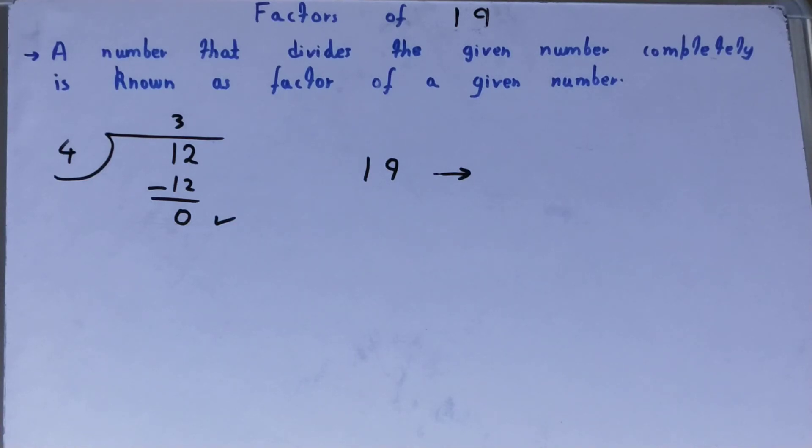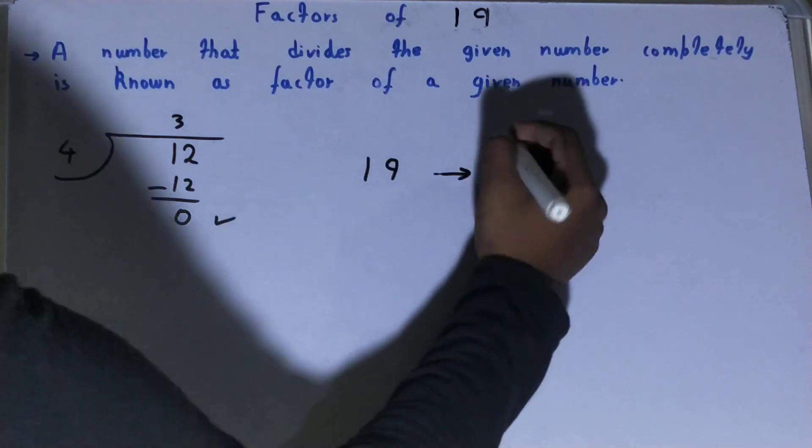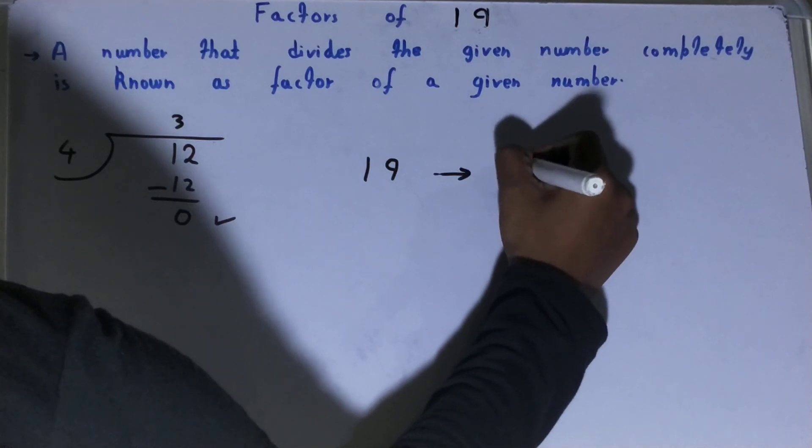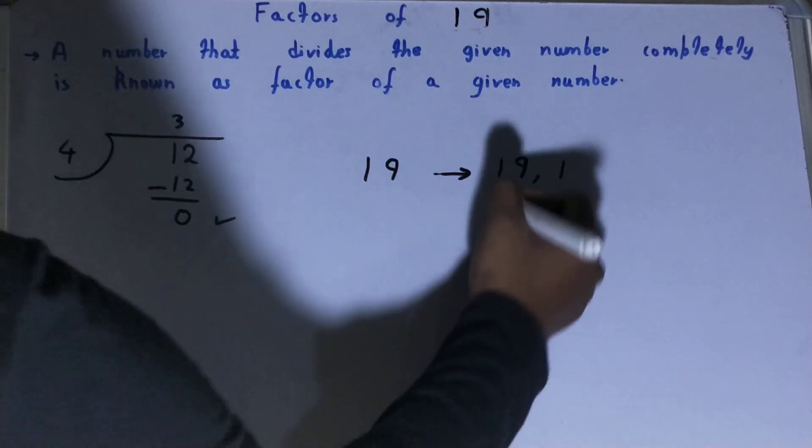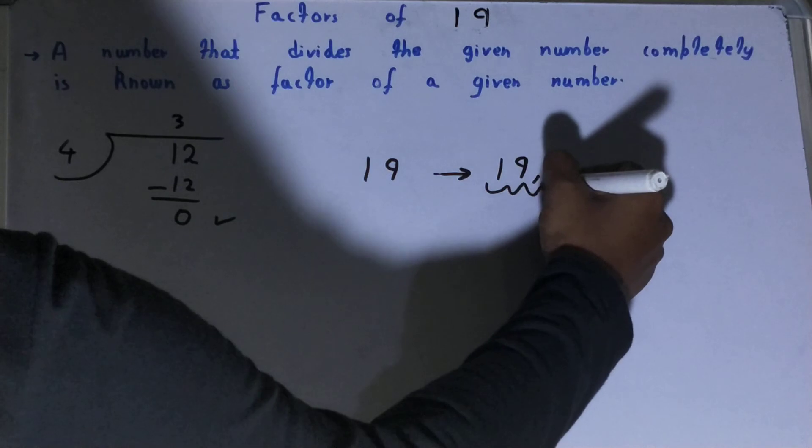A prime number has the property that they are only divisible by themselves and one. So 19 is only divisible by itself, that is 19, and 1, and no other number, neither 2 nor 3 nor any other number. So you already have your set of all factors for the number 19, that is 19 and 1.